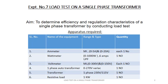The aim of this experiment is to determine the efficiency and regulation characteristics of a single-phase transformer by conducting a load test. The apparatus required includes: an ammeter (MI moving iron type), two numbers — 5 amps and 20 amps; a wattmeter rated 6 amps, 230 volts, 1000 watts, UPF; a voltmeter 0 to 300 and 150 volts; a single-phase autotransformer; a transformer; a single-phase 230 volt resistive load of 1 kilowatt.